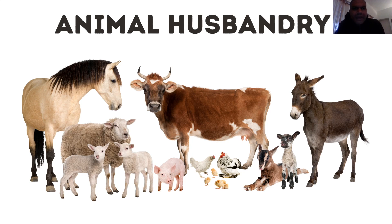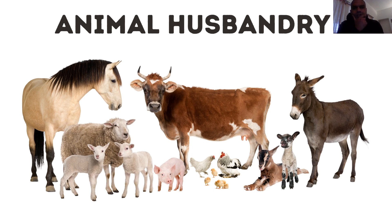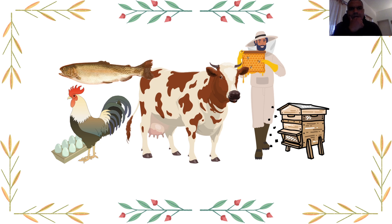In this video we're going to look at animal husbandry. Animal husbandry is the business of keeping animals with the intention of producing food. We will be covering it from the point of view of rearing cattle, poultry, fish, and beekeeping.